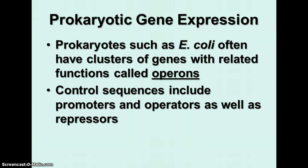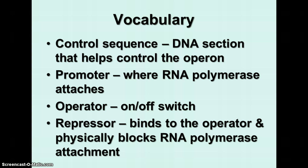In prokaryotes, you find clusters of genes with related functions. Remember, prokaryotes have only one chromosome, so they're much simpler. Since they are single cells, they have to take care of all the needs of the cell in one cell. They have these clusters of genes called operons, and the operons are controlled by various kinds of molecules. The control sequences include promoters and operators as well as repressors. A control sequence is the DNA section that helps control the operon — it's the switch that turns it on or off.